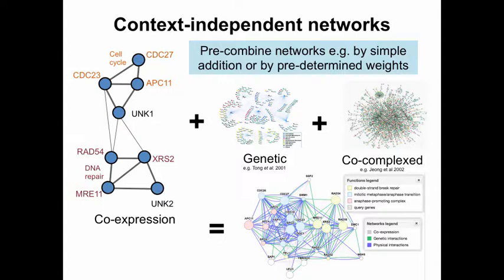You can come up with a single network which combines all the data sources in a fixed way — either by just adding them together, where the strength of linking between two nodes is the sum of link strengths across all data sources. That's surprisingly effective. Or you can assign them a weight based on how well that data source matches the co-annotation patterns in Gene Ontology, which is what most people do.